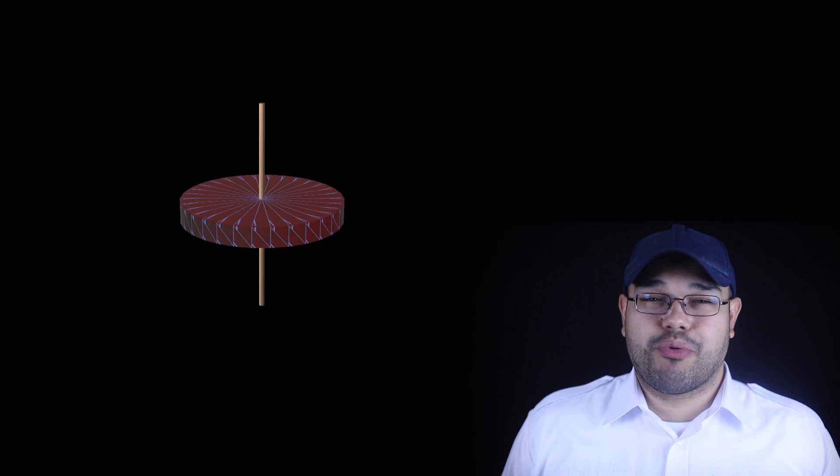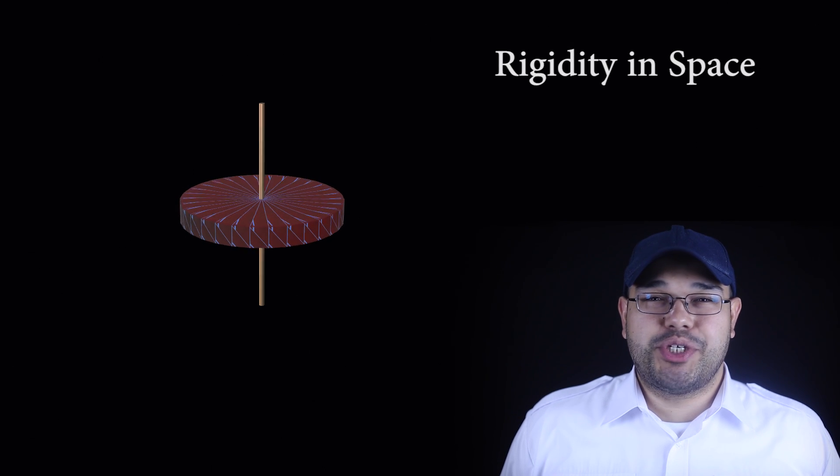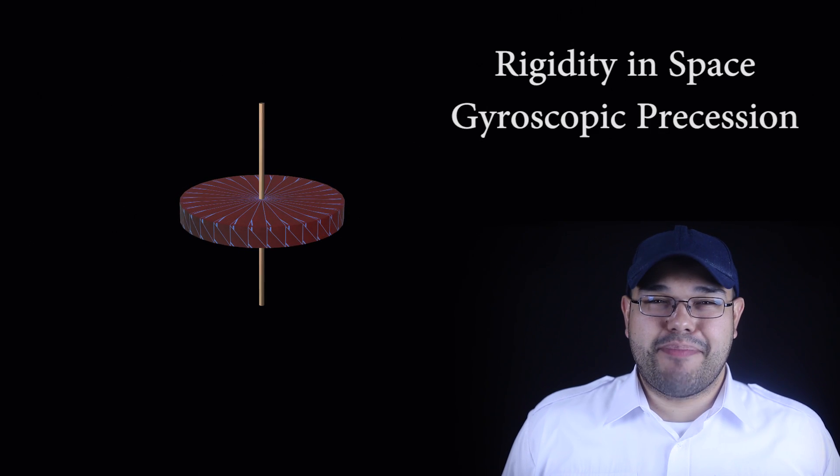A gyroscope is simply a spinning mass. The angular momentum of this spinning mass results in two very useful properties: rigidity in space and gyroscopic precession.